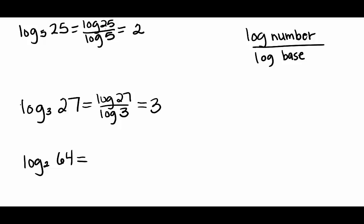Log base 2 of 64 is log base 10 of 64 divided by log base 10 of 2. Log of the number divided by log of the base, or log of the answer divided by log of the base. If you plug that into your calculator, you should get 6. So the change of base formula can be very handy for calculating these logs so that we can plug them into a regular scientific calculator.